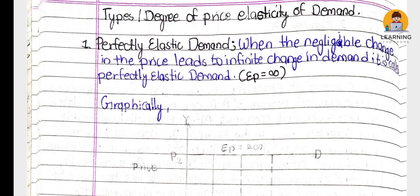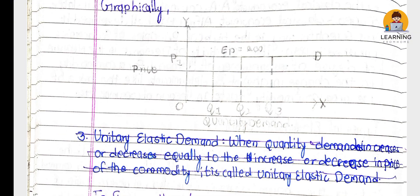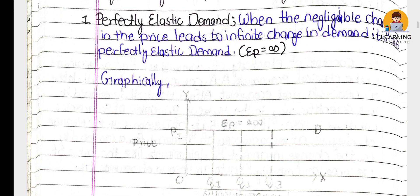Graphically, on this graph, the price is OP - it is constant. The quantity demanded changes from OQ1 to OQ2 to OQ3. That means price is constant but quantity demanded keeps changing. This is perfectly elastic demand.